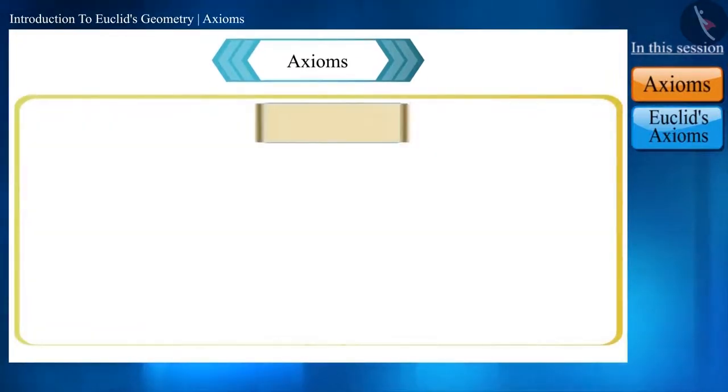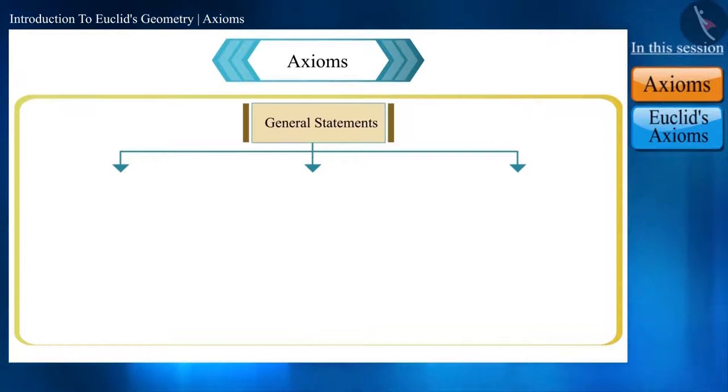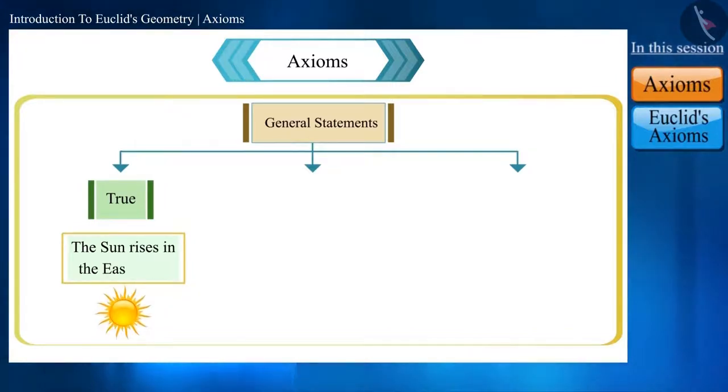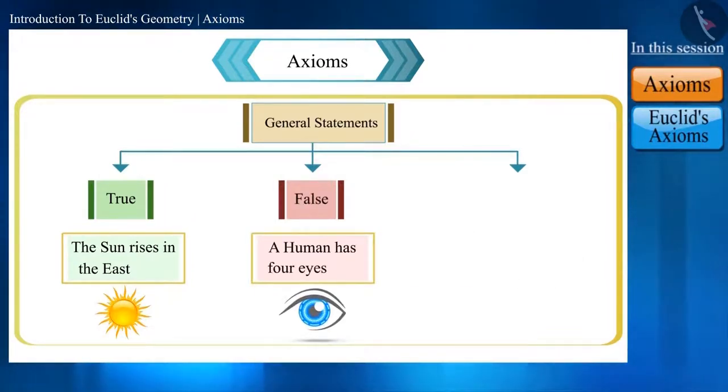Friends, there are generally three types of statements: one that is always true such as the sun rises in the east - it is universally true. The other which is always false such as a human has four eyes.